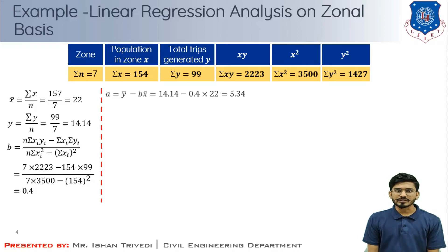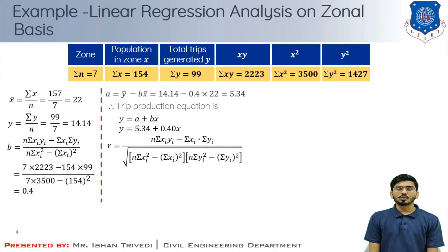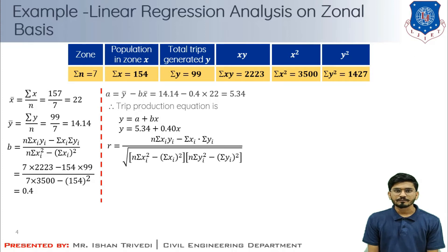With these computed values, the trip-generating equation in the form y = a + bx becomes: y = 5.34 + 0.40x. To validate this equation, I will find the coefficient of correlation r. This tells us whether the relationship between total trips and the population in the zone is strongly correlated or not.